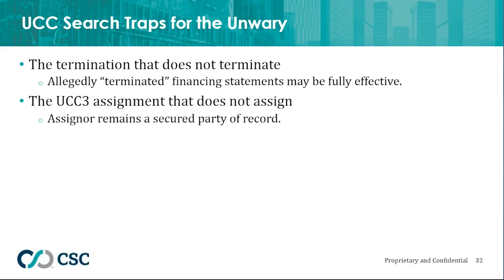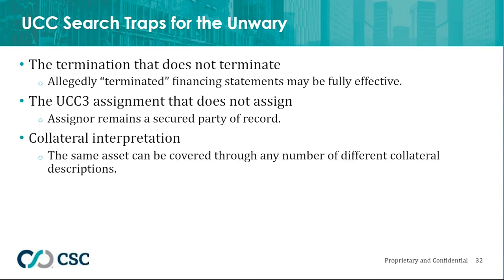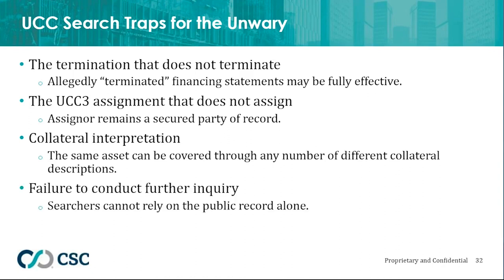The UCC-3 assignment is another trap — many people don't realize that it does not assign the security interest. All it does is assign the right to amend the financing statement, so the assignee becomes a secured party of record and the assignor remains a secured party of record. This is important when interpreting a search and when sending notices to all parties entitled to them. When interpreting collateral, always read it broadly — understand that the same collateral can be described in many different ways. Throughout the process, remember that one of the biggest traps is failure to conduct further inquiry. A search is a starting point for further inquiry — it is not the end of the process.